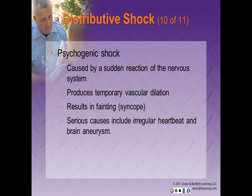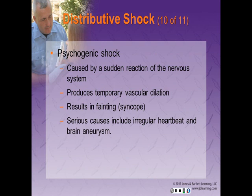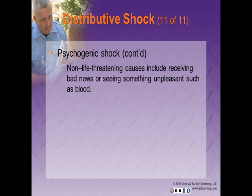Psychogenic shock occurs when a patient has a sudden reaction of the nervous system that produces a temporary generalized vascular dilation, resulting in fainting or syncope. Blood pools in the dilated blood vessels, reducing the blood supply to the brain, and the patient will faint. Life-threatening causes include irregular heart rhythms and brain aneurysms. Non-life-threatening causes include receipt of bad news, experiencing fear, or seeing unpleasant sights like the sight of blood — which is very common.